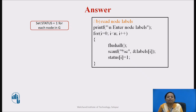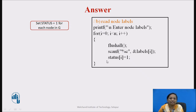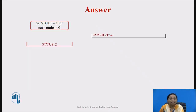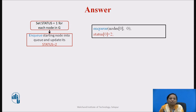Now we will see the implementation part. The first step in the BFS algorithm is to set status 1 for each node in G — that was already done when scanning the labels for each node. The next step is enqueuing the starting node into the queue and updating its status to 2. The enqueue function is called passing the first node information and its index information, so both are enqueued into the queue and the index queue, and the status of the first node is updated to 2.